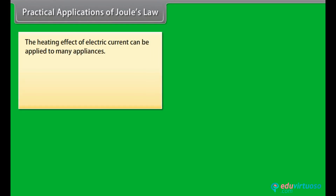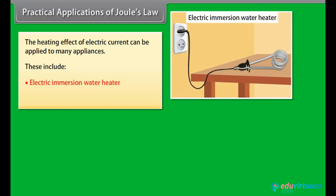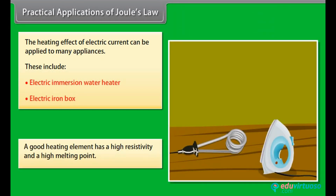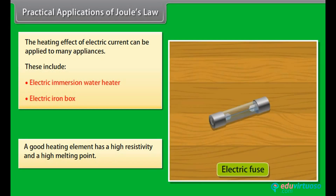Practical applications of Joule's Law include many appliances such as the electric immersion water heater and the electric iron box. A good heating element has a high resistivity and a high melting point. An electric fuse is an example of the heating effect of electric current — a rating of 3A means the maximum current it can sustain is 3A.